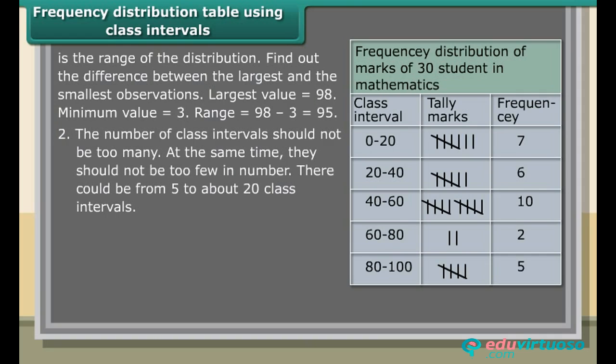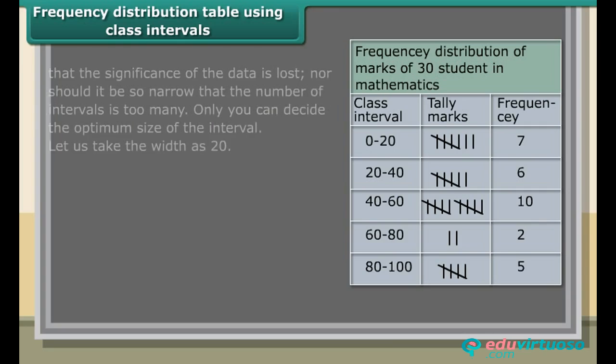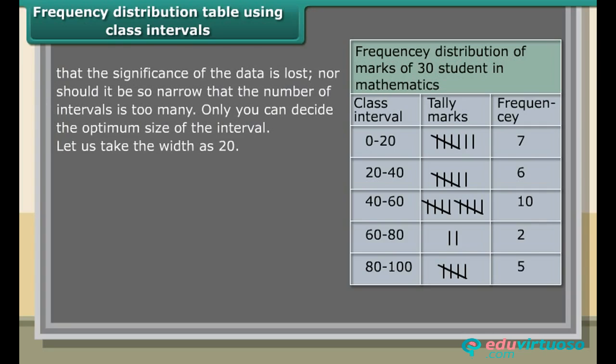The number of class intervals should not be too many or too few — there could be from 5 to about 20 class intervals. Based on the range, you choose the width of the class intervals with care. It should not be so wide that significance of the data is lost, nor so narrow that the number of intervals is too many. Only you can decide the optimum size of the interval.